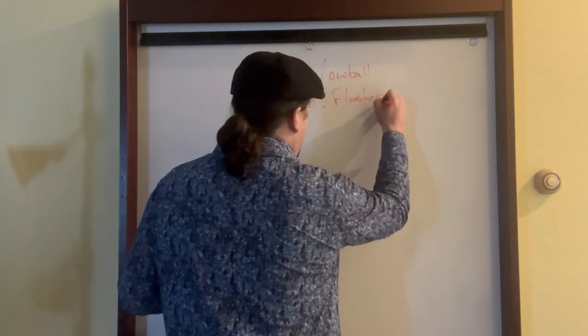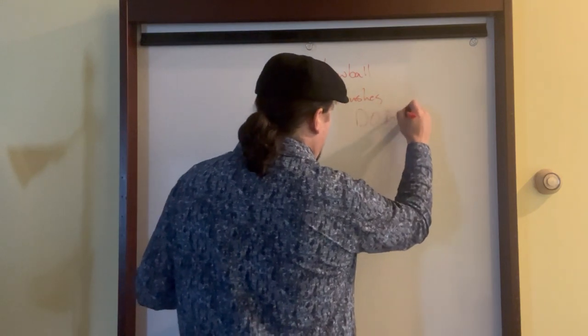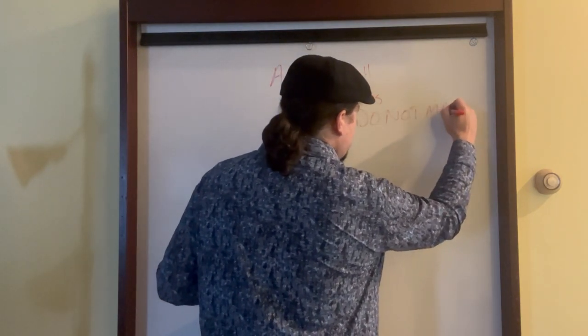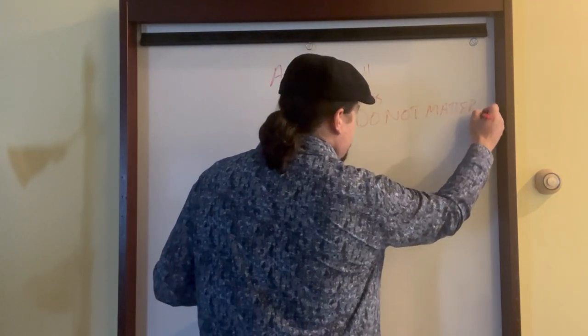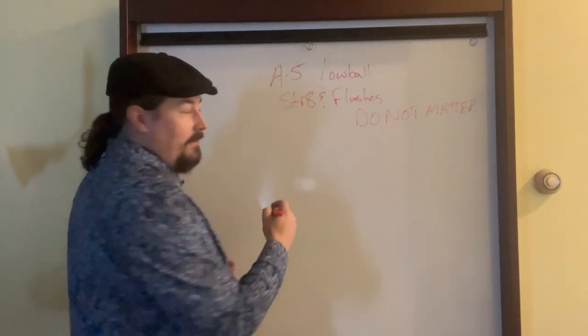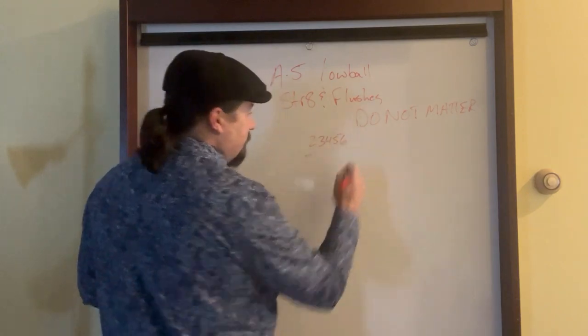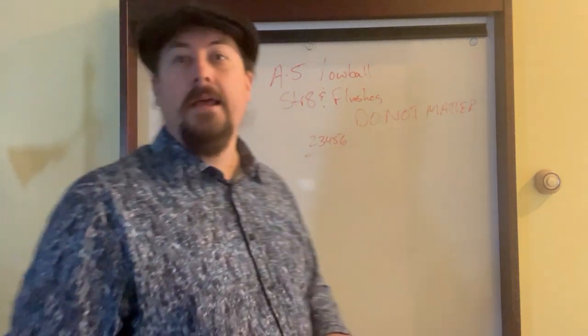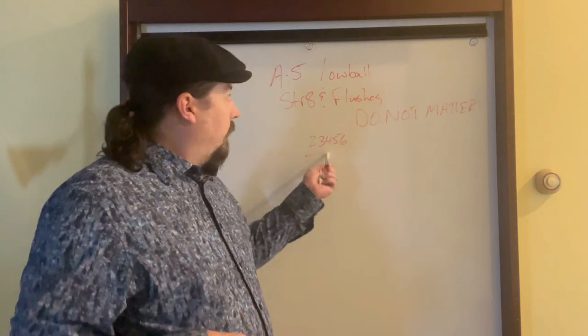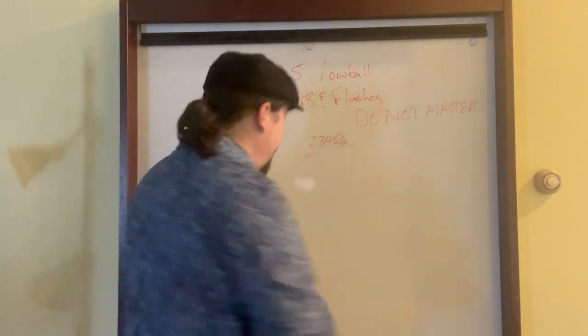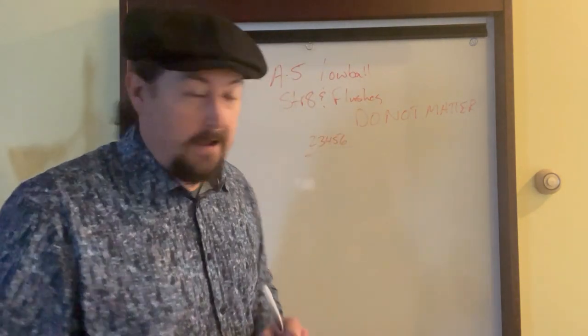Do not matter. Do not matter. And the reason why that's important is because, as you guys know, in deuce to seven, if you have a two three four five six, that is a straight. That is a really high hand, and that is a really bad hand. In ace to five lowball, that is a really strong hand.